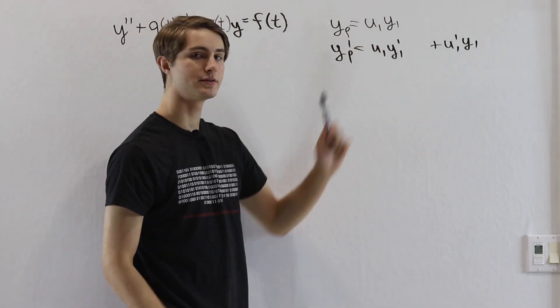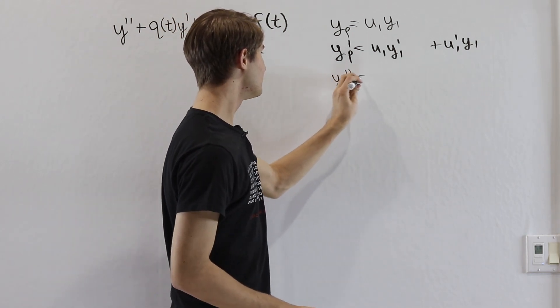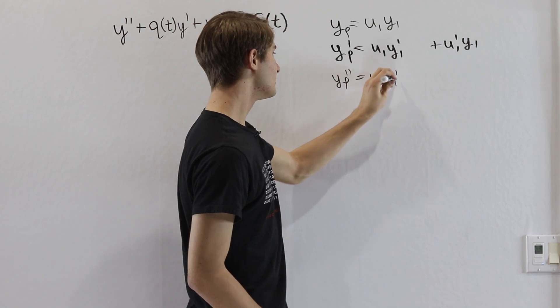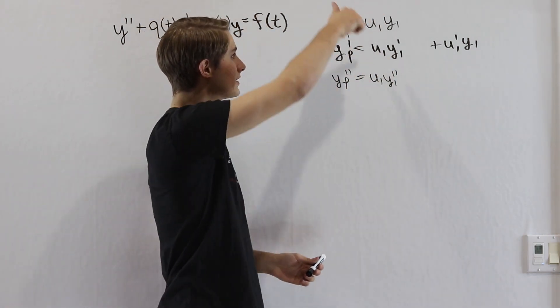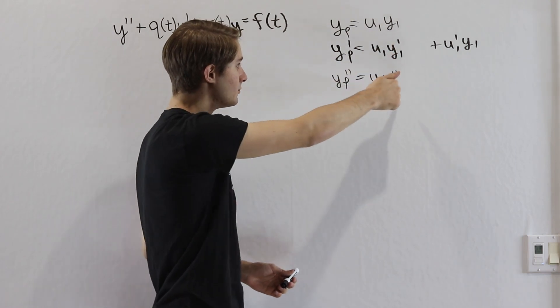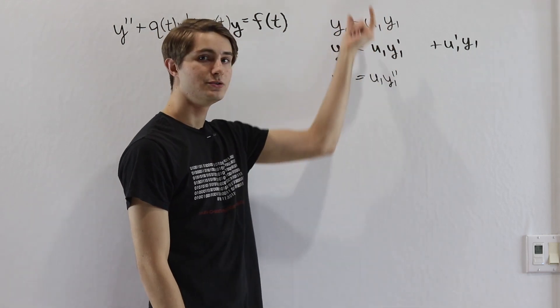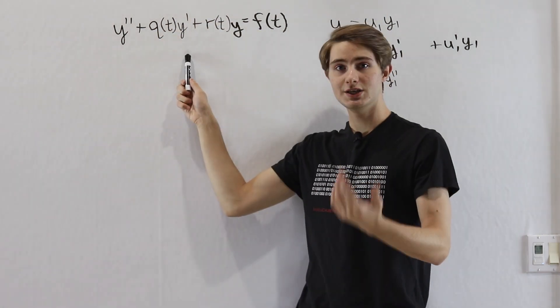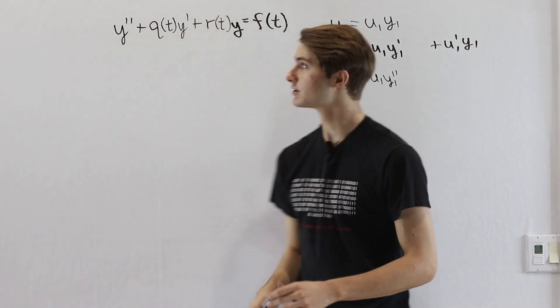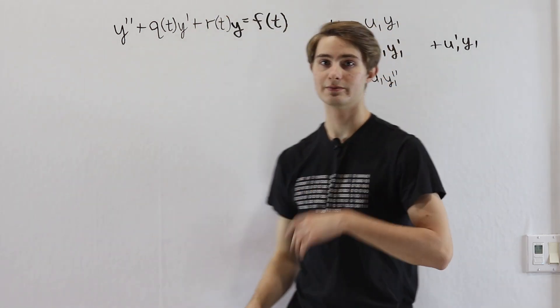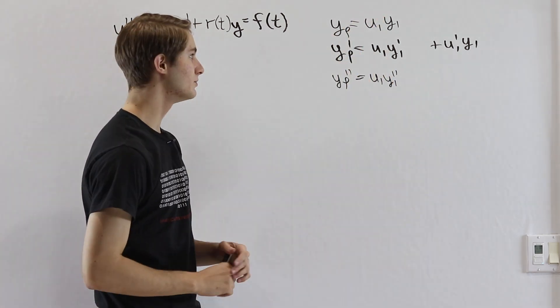When we differentiate this again for yp double prime, we're going to have a u1y1 prime as well. When we look at this column right here - y1, y1 prime, y1 double prime going with each of those derivatives - when we plug this part into our equation, it's going to equal 0 because y1 is one of the homogeneous solutions. That makes it really convenient for us to deal with our equation.